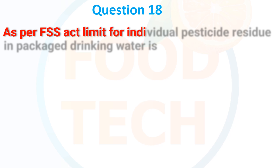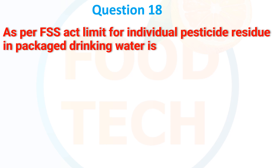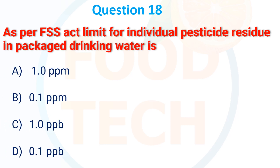As per the FSSAI Act, the limit for individual pesticide residue in packaged drinking water is: A. 1.1 ppm, B. 0.1 ppm, C. 1.0 ppb, D. 0.1 ppb. The correct answer is 0.1 parts per billion.